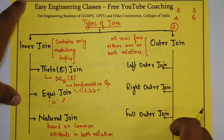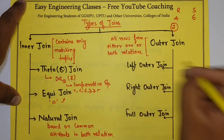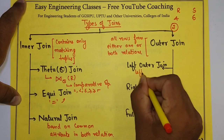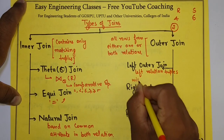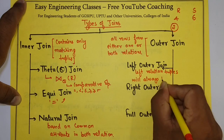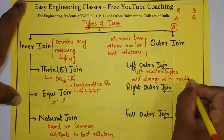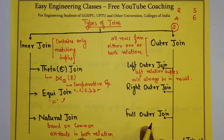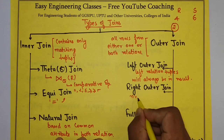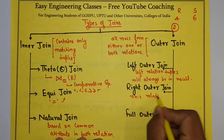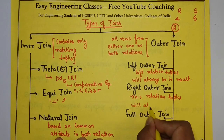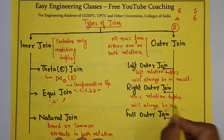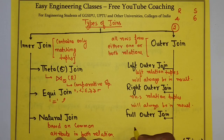Outer join is classified into three different types: left, right, and full outer join. In left outer join, the left relation will always have all its tuple values in the result, whether the value is matched or not. In right outer join, the right-hand side relation will have all the tuple values. Whereas in full outer join, tuples from both relations take part.